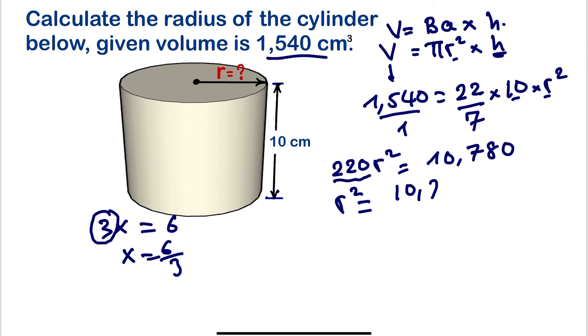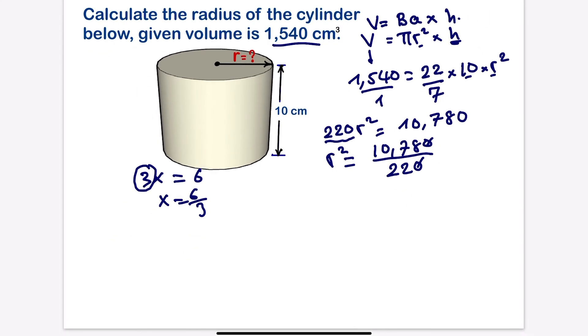So here we are going to have r² will be equal to 10,780 divided by 220. This zero and this zero will cancel, we'll be left with 1,078 divided by 22.